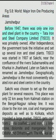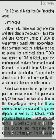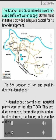Before 1947 there was only one iron and steel plant in the country: Tata Iron and Steel Company Limited (TISCO). It was privately owned. After independence, the government took the initiative and set up several iron and steel plants. TISCO was started in 1907 at Sakchi, near the confluence of the rivers Subarnarekha and Kharkai in Jharkhand. Later, Sakchi was renamed Jamshedpur. Geographically, Jamshedpur is the most conveniently situated iron and steel center in the country. Sakchi was chosen for several reasons: it was 32 kilometers from Kalimati Station on the Bengal-Nagpur Railway line, and close to iron ore, coal, and manganese deposits, as well as to Kolkata, which provided a large market. TISCO gets coal from Jharia coal fields, and iron ore, limestone, dolomite, and manganese from Odisha and Chhattisgarh. The Kharkai and Subarnarekha rivers ensured sufficient water supply. Government initiatives provided adequate capital for later development.